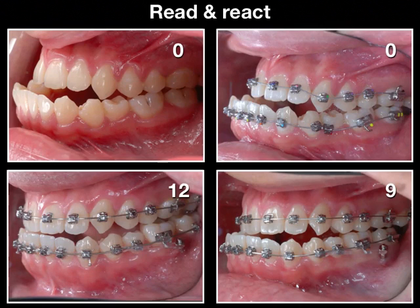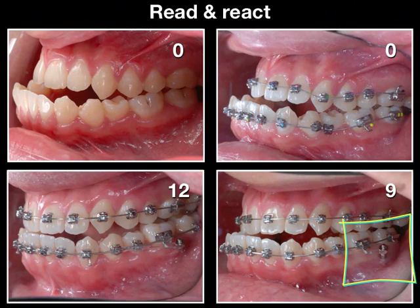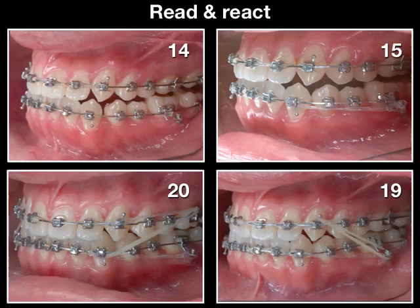We connected the power chain to create a force to drive the whole dentition backward. By 12 months — just three months later — the overjet already became edge to edge. Every month we show you the series of pictures so people can follow how the problem was solved.